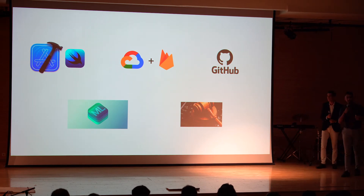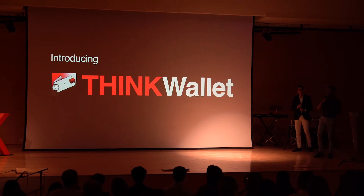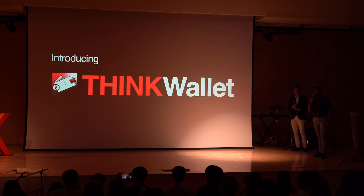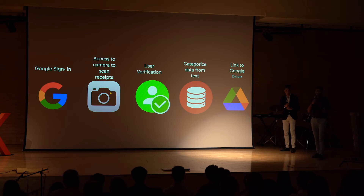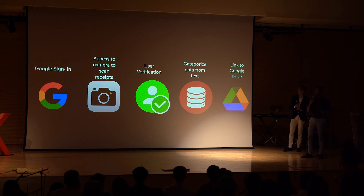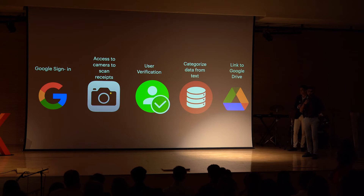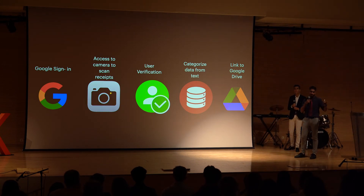Having investigated all that, we are now in a position to create our own app. Introducing Think Wallet — the native Think Global School app designed to help students automate their expense-related tasks. It's a basic five-step process: first, a Google sign-in to identify students; second, access to the iPhone camera to scan receipts and record them; third, verification to make sure all the information is correct, with the option to manually enter information; fourth, categorization of data from text using multiple naming conventions to store the data; and lastly, most importantly, a link to Google Drive so the finance office can thank us.